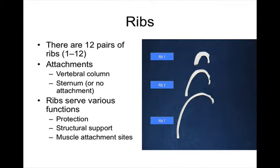Ribs are another component of the axial skeleton. We have 12 pairs of ribs. The ribs attach posteriorly to the vertebral column and anteriorly they attach to the sternum. Note that some ribs don't make it to the sternum — they're called floating ribs. The ribs serve various functions: they protect underlying organs like the lungs, digestive organs, stomach, pancreas, and the heart. They provide structural support and muscle attachment sites, including for abdominal muscles and intercostal muscles that help us breathe along with the diaphragm.